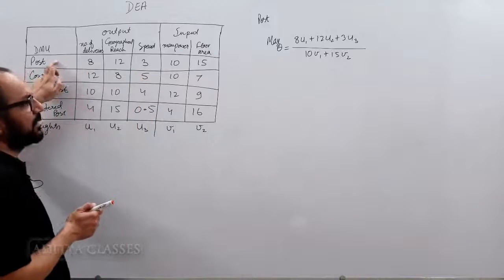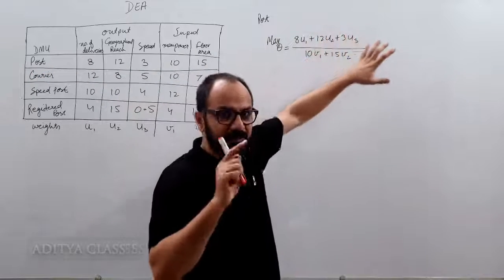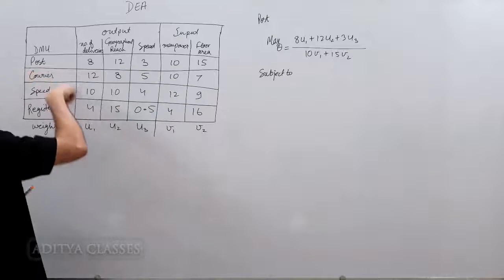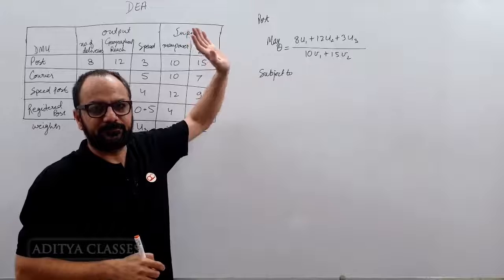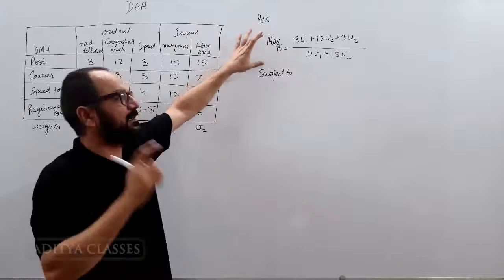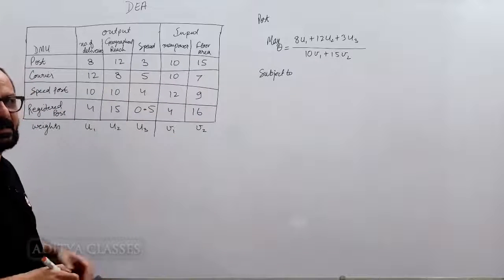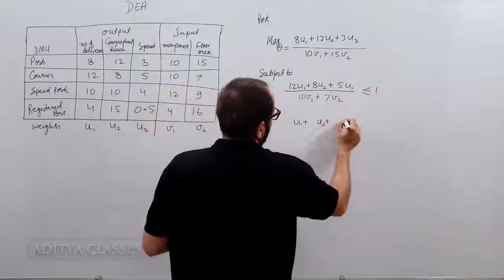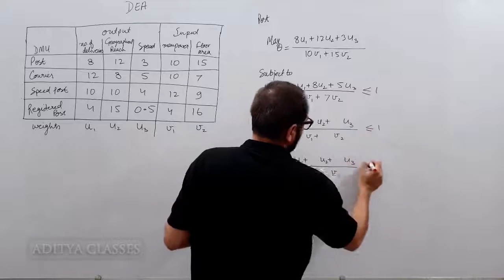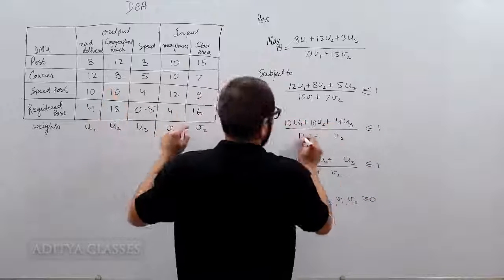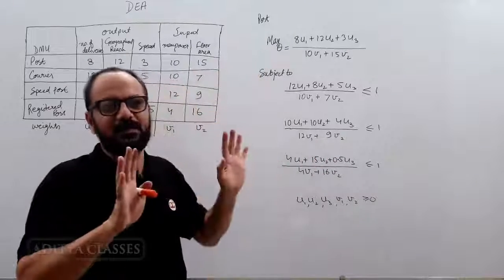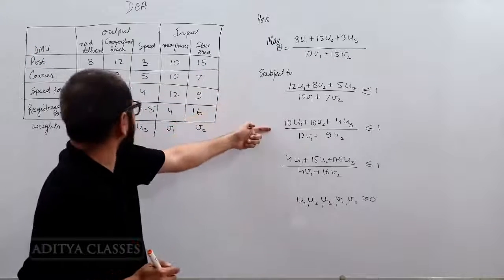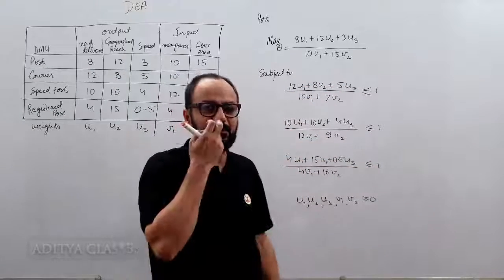What are those constraints? The constraints are that efficiencies of none of these three remaining should be more than 1. I need to optimize or maximize this efficiency subject to efficiencies of these three being less than 1. This is my formulation for a DEA, as simple as that. I will be maximizing it for post subject to the efficiencies for courier, speed post, and registered post remain less than or at most equal to 1. This is a very simple formulation.